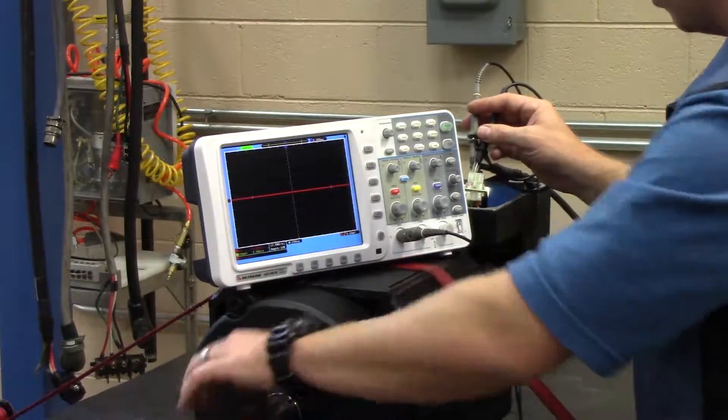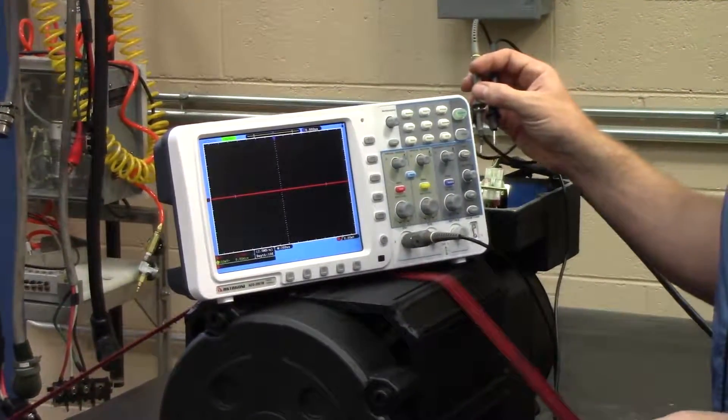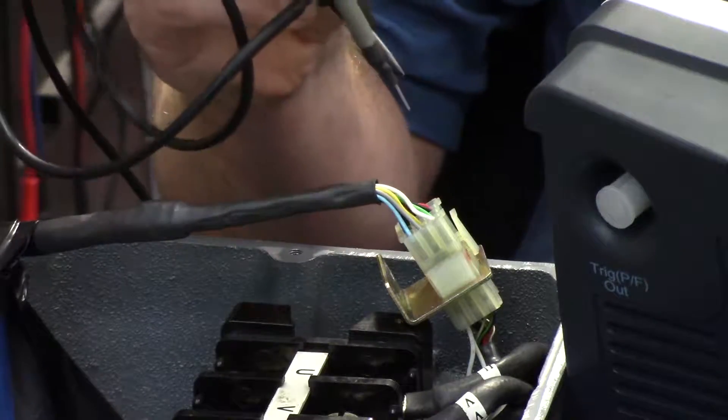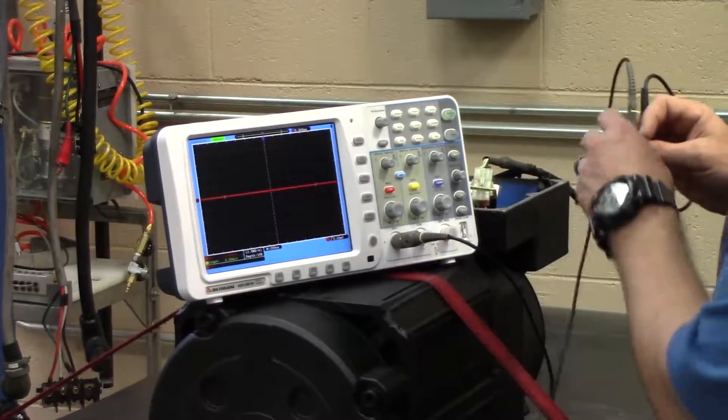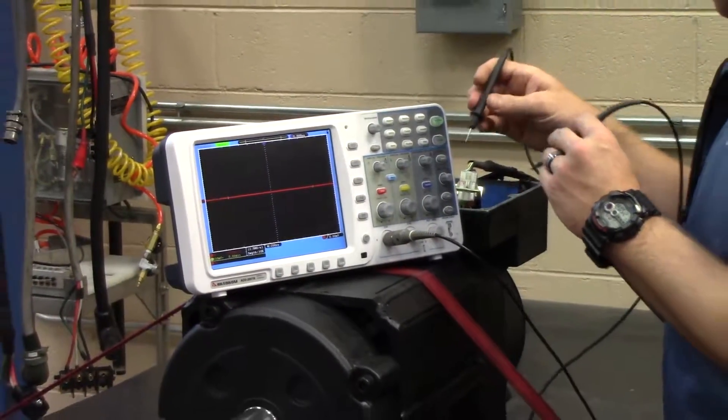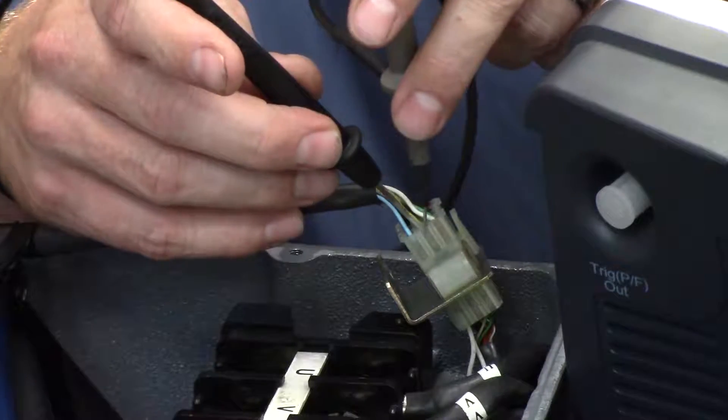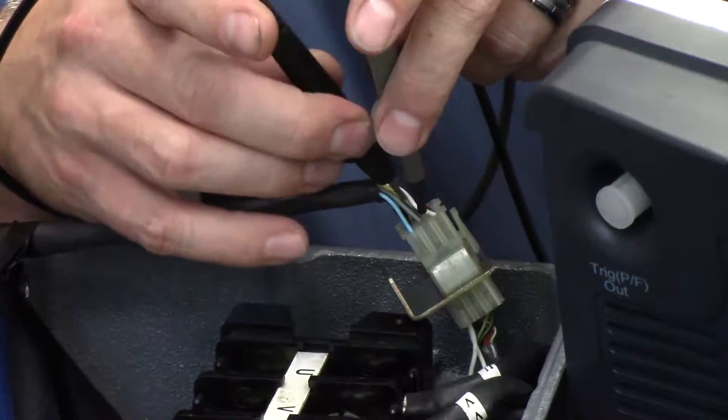Now when you move to the B channels on pins five and six, it's going to look to your eyes identical. But then between seven and eight is the Z's, Z and Z-not.